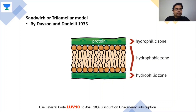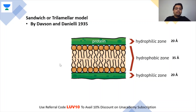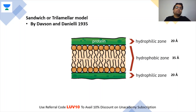In terms of dimensions, the hydrophilic protein zone is about 20 Å on each side (top and bottom), and the lipid bilayer in the middle is about 35–40 Å. So the total thickness of the plasma membrane is approximately 75 Å.